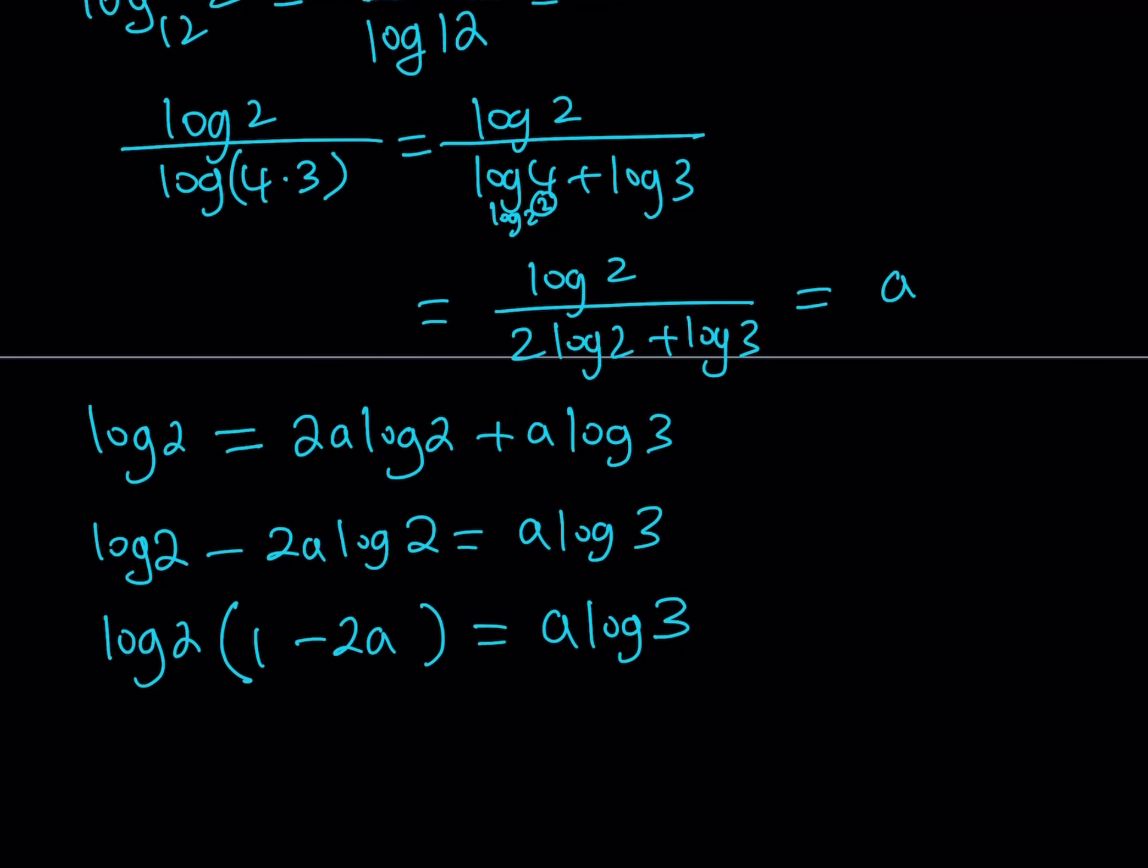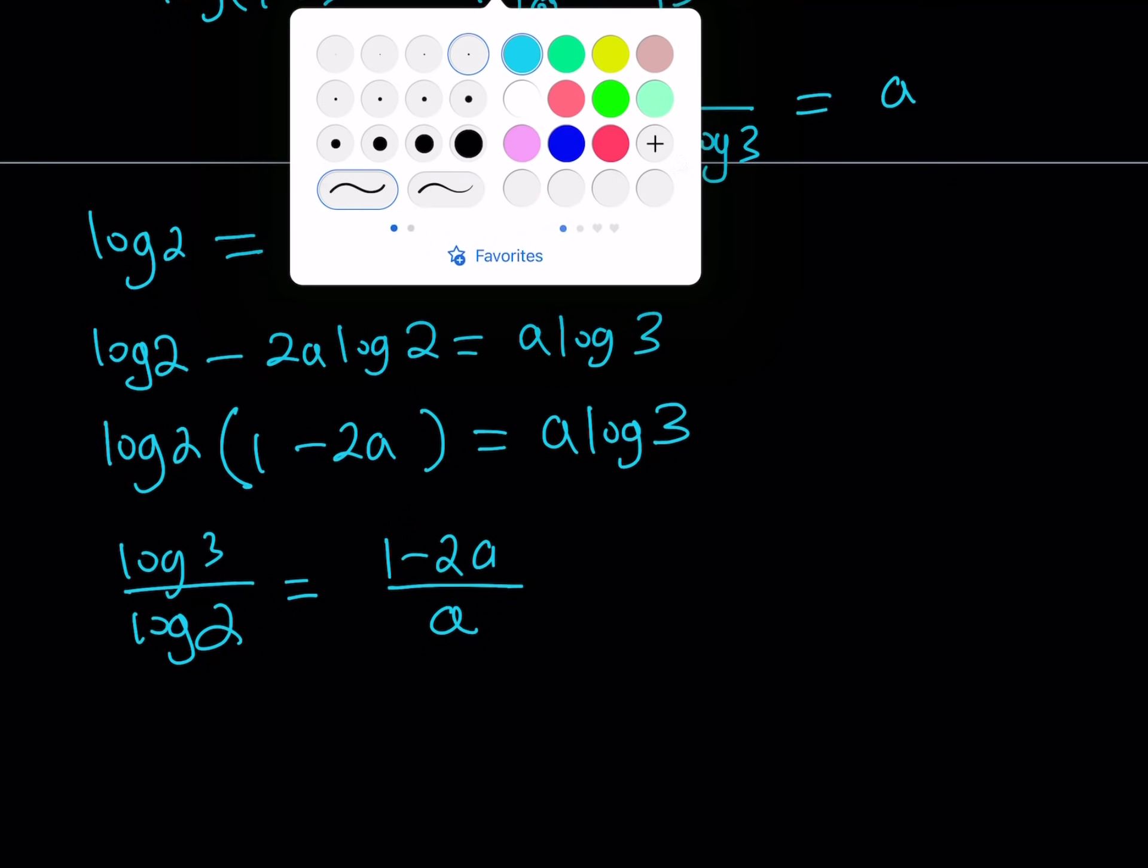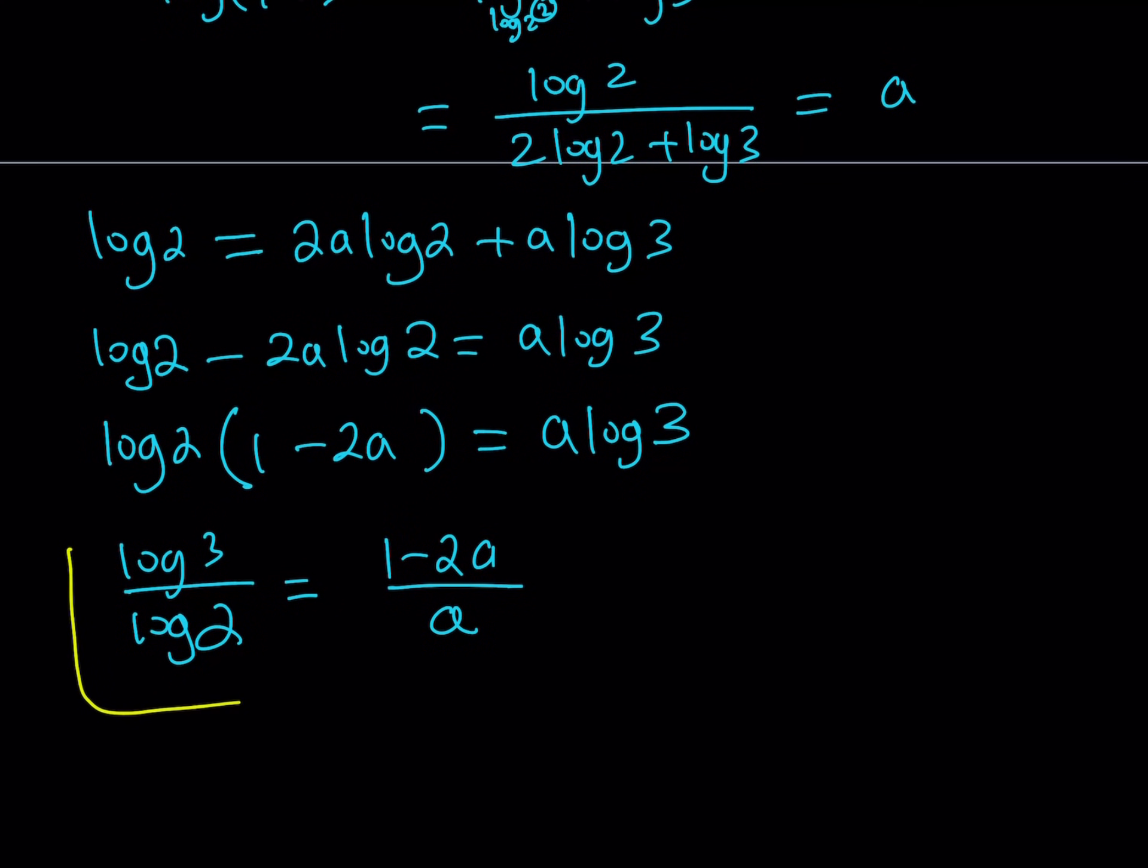And then finally, so here's my goal to find the ratio of log 3 and log 2. Later on, this is going to be helpful. I'll show you how. But let's go ahead and find log 3 over log 2 from here. If you divide, do all the necessary arrangements, you get 1 minus 2A over A. So I was able to get log 3 over log 2 in terms of A. Great.